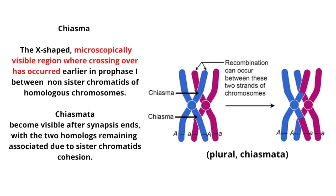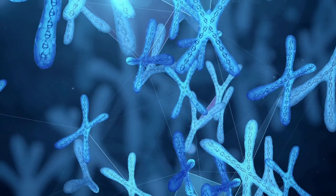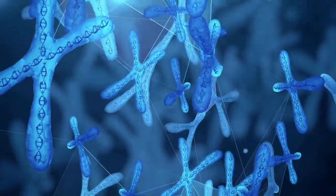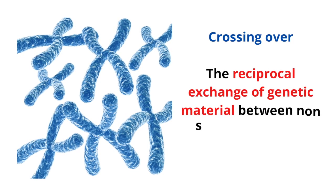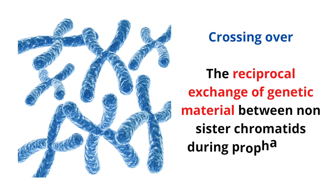Chiasma: the X-shaped, microscopically visible regions where crossing over has occurred earlier in prophase one, between non-sister chromatids of homologous chromosomes. Homologous chromosomes become visible after synapsis ends, with the two homologs remaining associated due to sister chromatid cohesion.